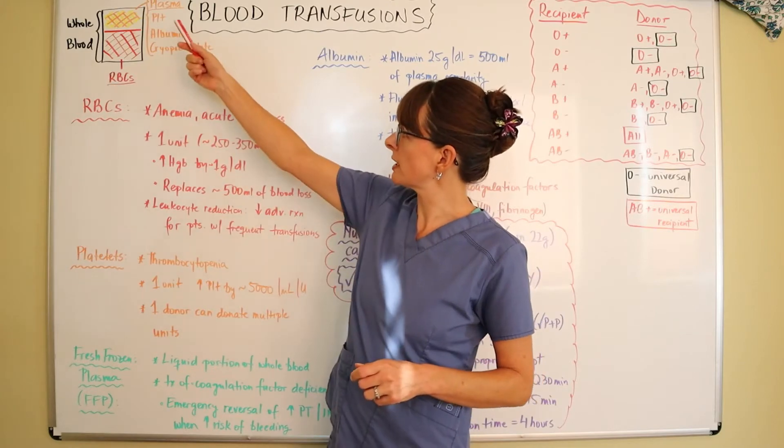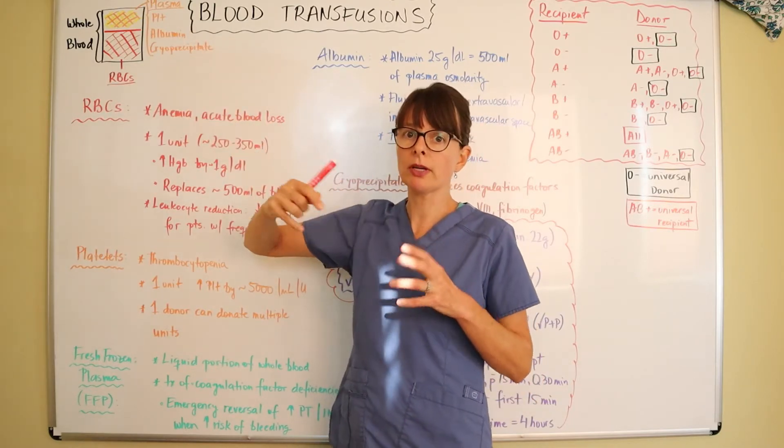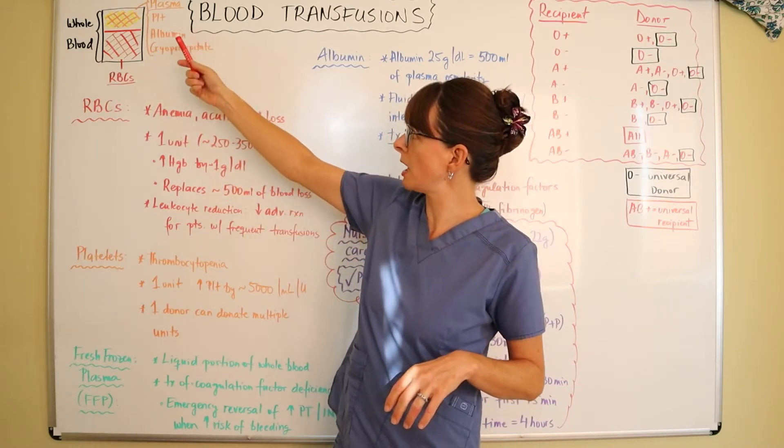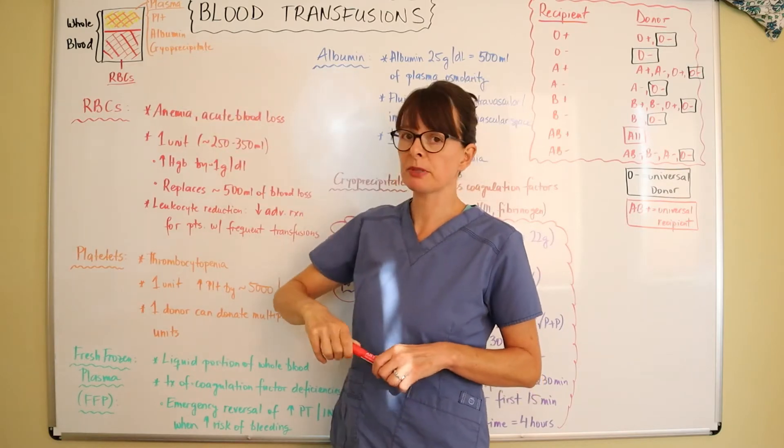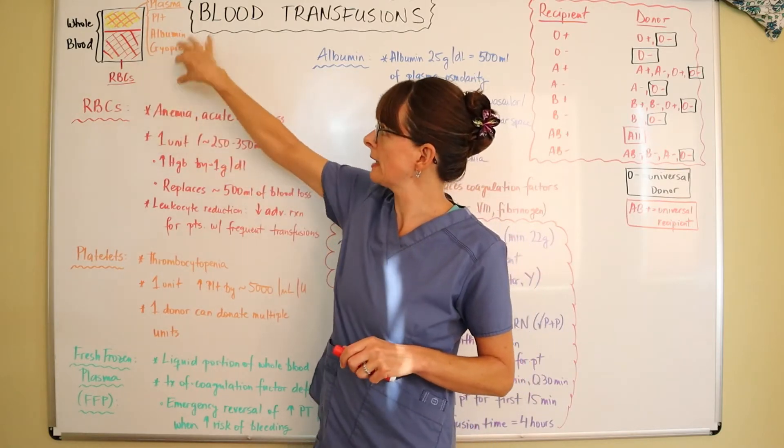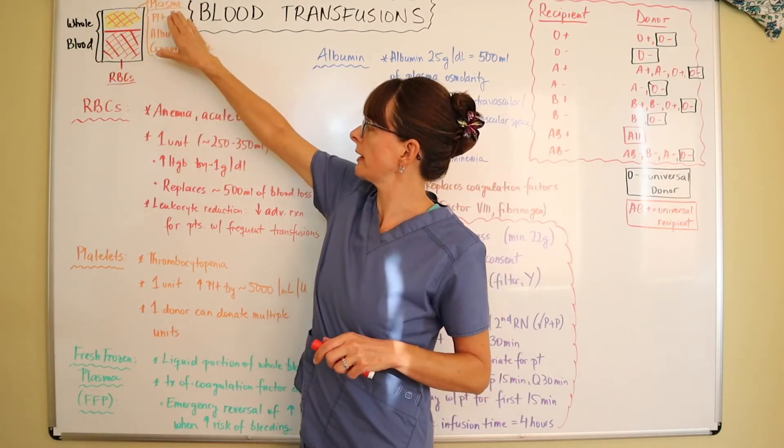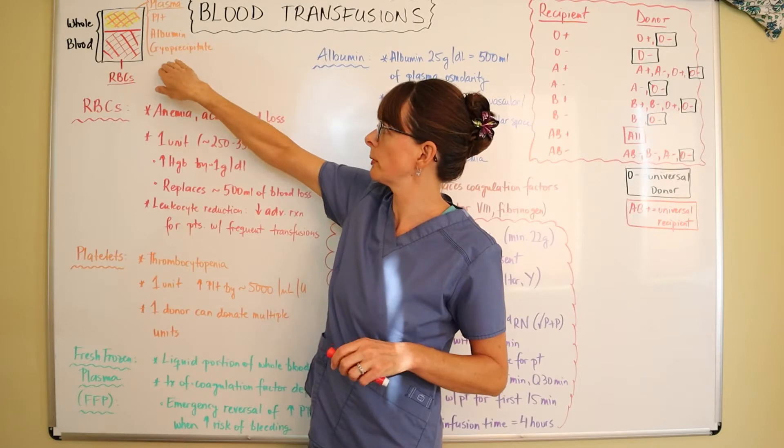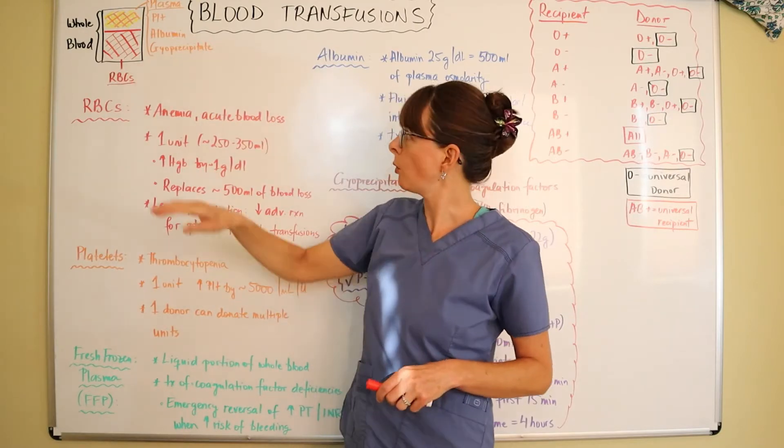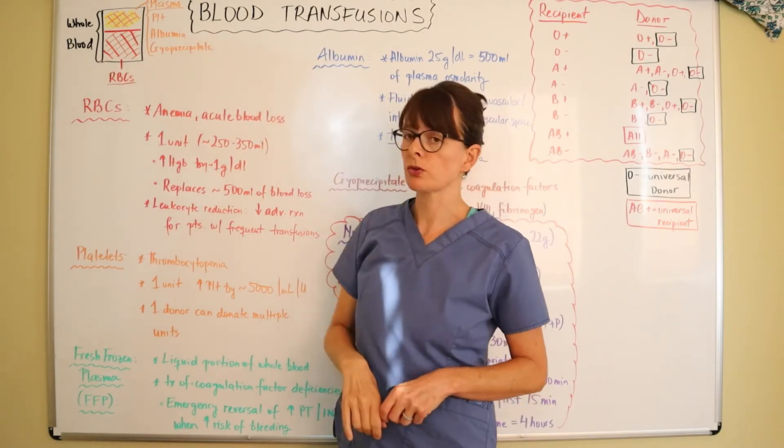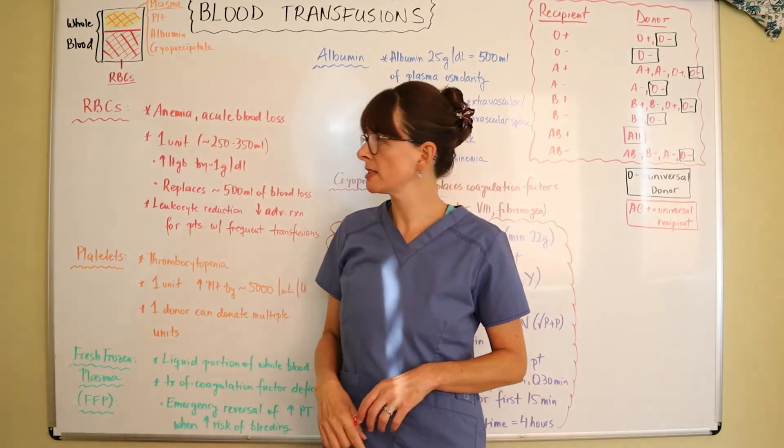The plasma contains three different components: platelets, albumin, and cryoprecipitate. We can transfuse any one of these, or plasma as a whole which would contain all three components. So let's look at those in more detail.